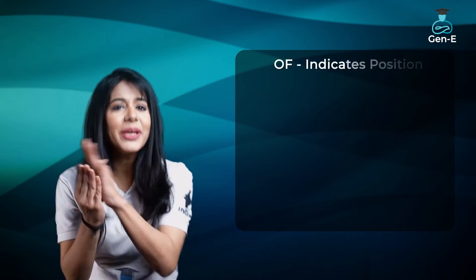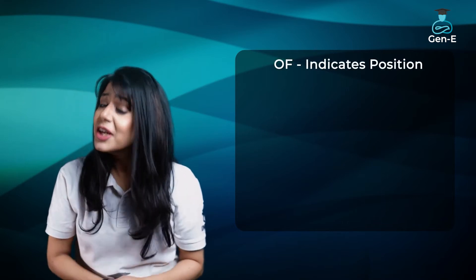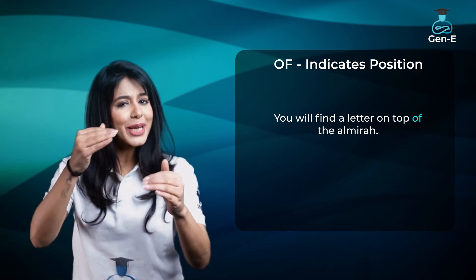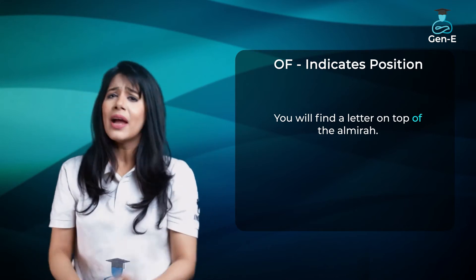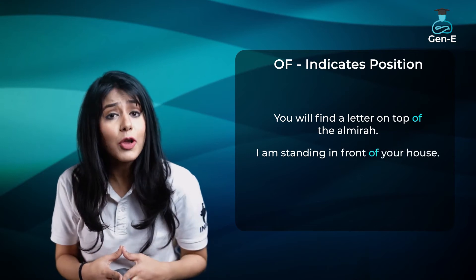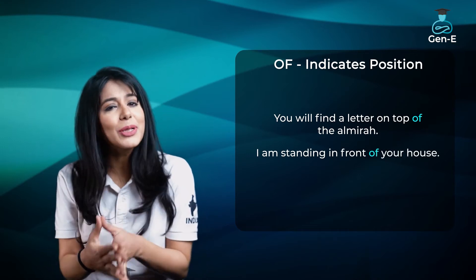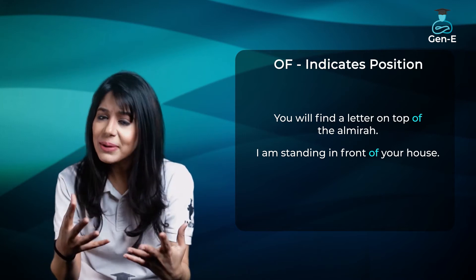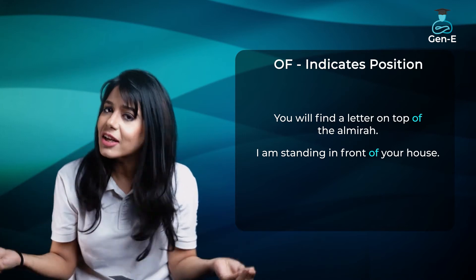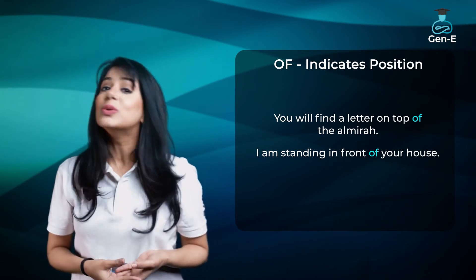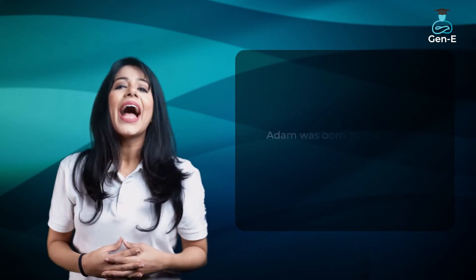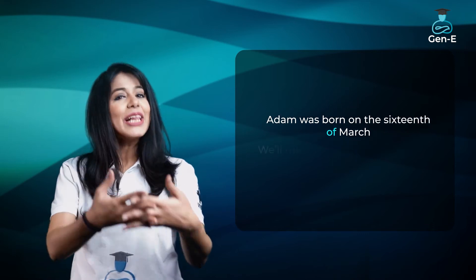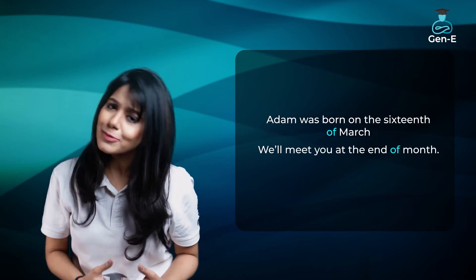Of aksar position bhi indicate karta hai. Jaise, 'You will find a letter on the top of the almirah' — almirah ke upar letter padi hui hai. 'I am standing in front of your house' — main ghar ke bilkul saamne khada hoon. Donon cases mein 'of' ne basically possession indicate kari. Of ko hum date ki sense mein bhi use karte hain. Jaise, 'Adam was born on the 16th of March.' 'We'll meet you at the end of the month.'